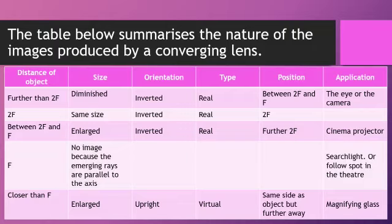However, if the distance of the object is at F, no image is formed because the emerging rays are parallel to the axis. This applies to the searchlight or follow spot in the theater.